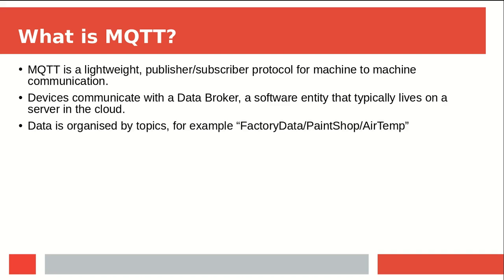The data the broker handles is organised by topics. These are formatted into levels, and you can subscribe to a specific topic such as factory/data/paint-shop/air-temperature, which would give you the temperature of the air in the paint shop. Or you could subscribe to a more general level — so you might ask for all the sensor data from the paint shop, which would include temperature, humidity, the amount of time the paint gun has been in use, and so on. Equally, you might have data from other parts of the factory, such as the machine shop or the warehouse.